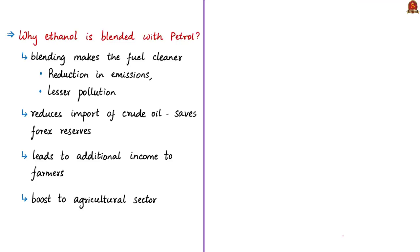Blending ethanol with petrol makes the fuel cleaner than non-blended petrol. This is because ethanol contains oxygen, allowing the engine to completely burn the fuel, resulting in fewer emissions — particularly reduction in carbon dioxide, carbon monoxide, and hydrocarbons. The news article mentions that increased ethanol blending leads to more environment-friendly fuel and lesser pollution. Even a 5% ethanol blend can replace millions of barrels of crude oil imports.